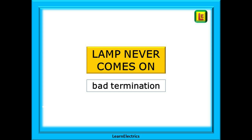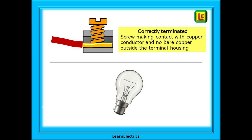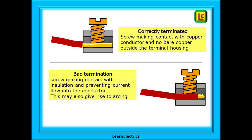Another example of the lamp never coming on is the result of bad terminations. Here is a correctly terminated conductor in a cutaway view of a terminal — the screw is firmly clamping the copper against the metal of the terminal. And here is an example of a bad termination, common after DIY work and an easy fault to simulate for an assessment. The screw is trapping the PVC insulation against the terminal. The insulation is doing exactly what it is designed to do — it is insulating the copper from the terminal and preventing current flow. An added danger of this fault is that arcing and sparking may result if the copper is close to but not touching the terminal, and this situation could give rise to fires.